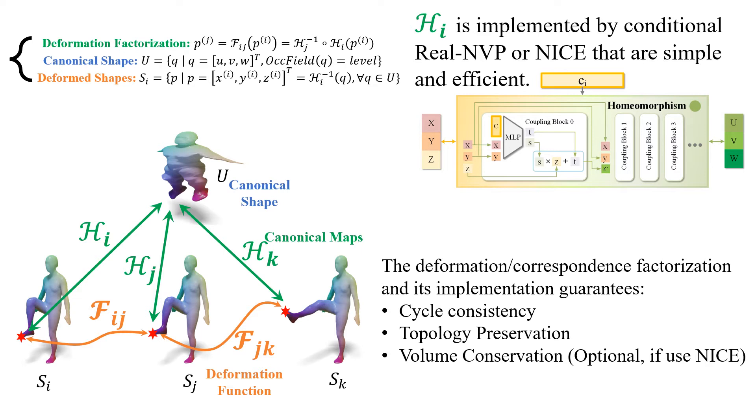Compared to previous methods, our modeling of the deformation is simple, efficient, but simultaneously guarantees real-world properties. Our representation of the canonical shape in the learnable canonical space is more flexible and stable for shape prior.